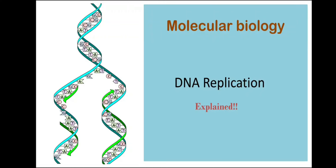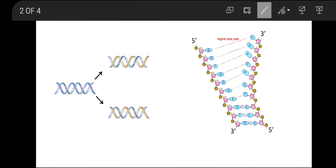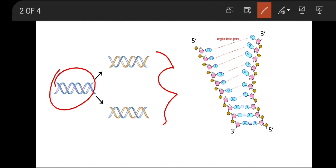Hello everyone and welcome back to my channel. In this video I will be talking about the process of DNA replication. In simple language, the process of DNA replication involves the formation of two new daughter DNAs from the parent DNA. These two new daughter DNAs are the exact replicas of the parent DNA, and each daughter DNA has received one strand of the parent from which it has synthesized one new DNA strand.